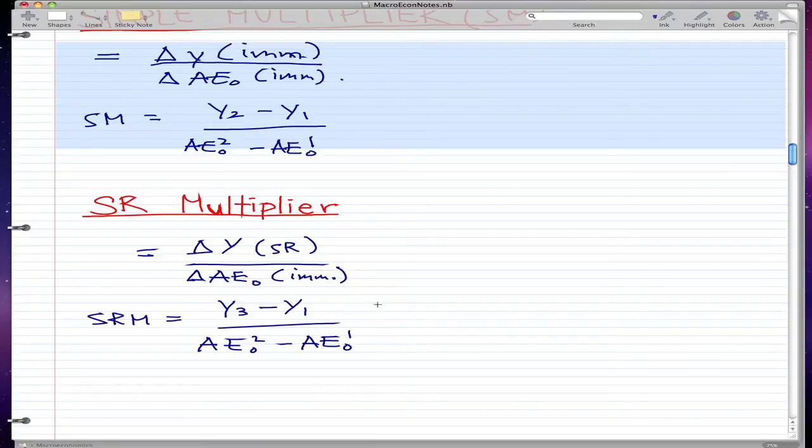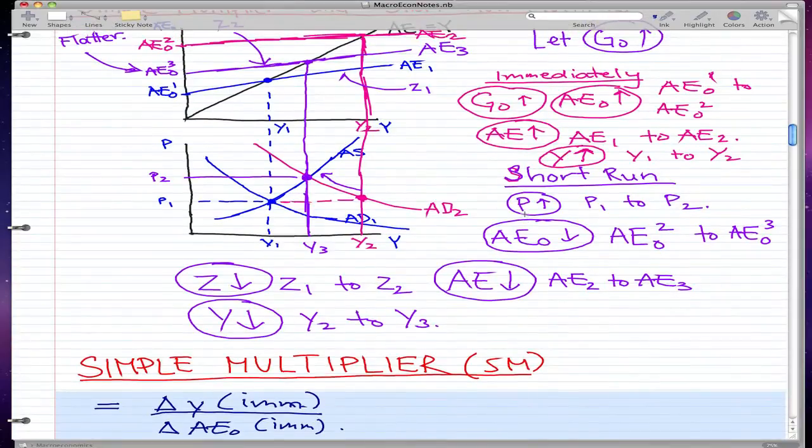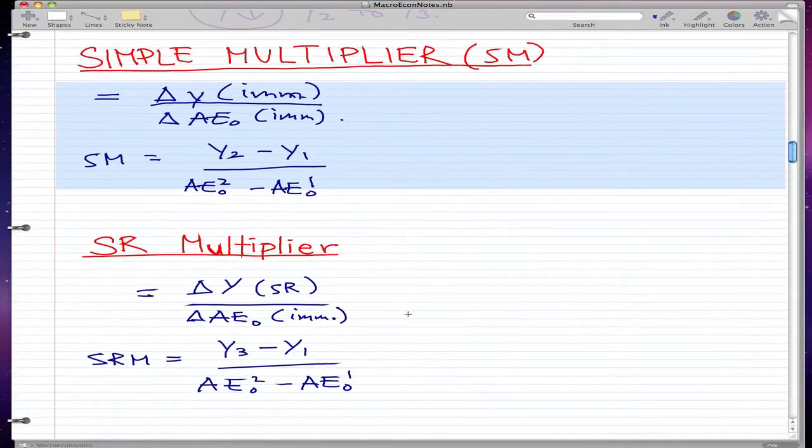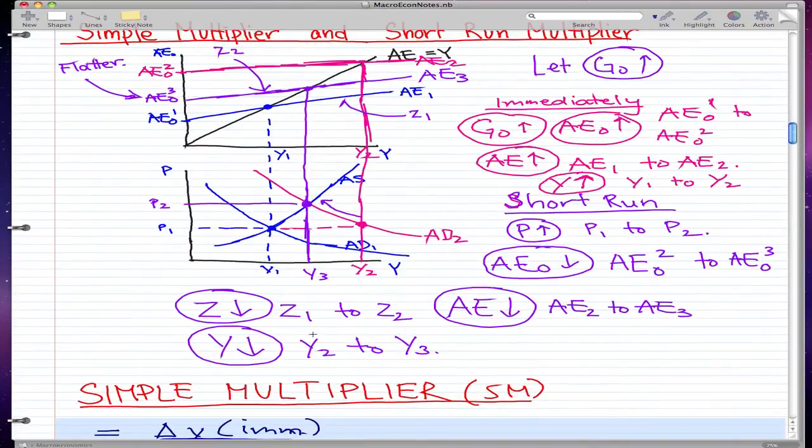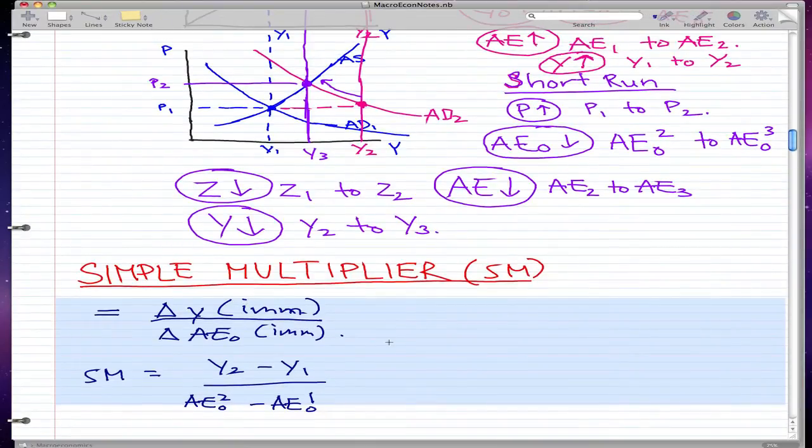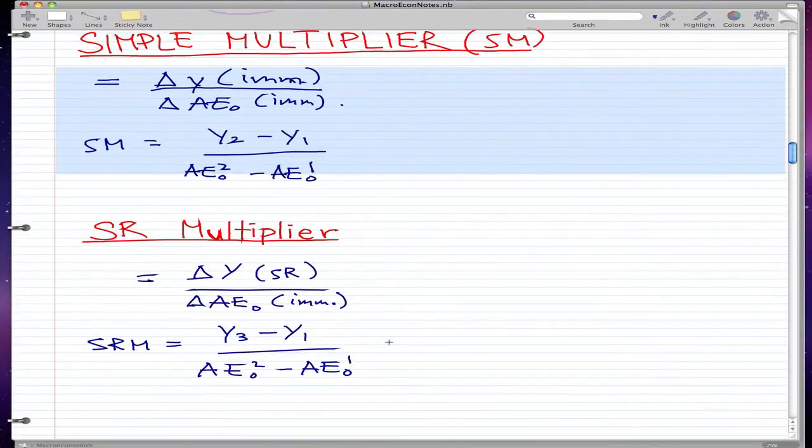And the expanded formula is y3 minus y1 over AE not 2 minus AE not 1. And we could also see this in the graph that we had, that in the short run, we take the difference in change of y3 and y1. So we take this change from y3, the purple line, to the blue line, and we take it over the AE not immediate. And like I said, I don't remember why. And if you do know why, please put it in the comments below.